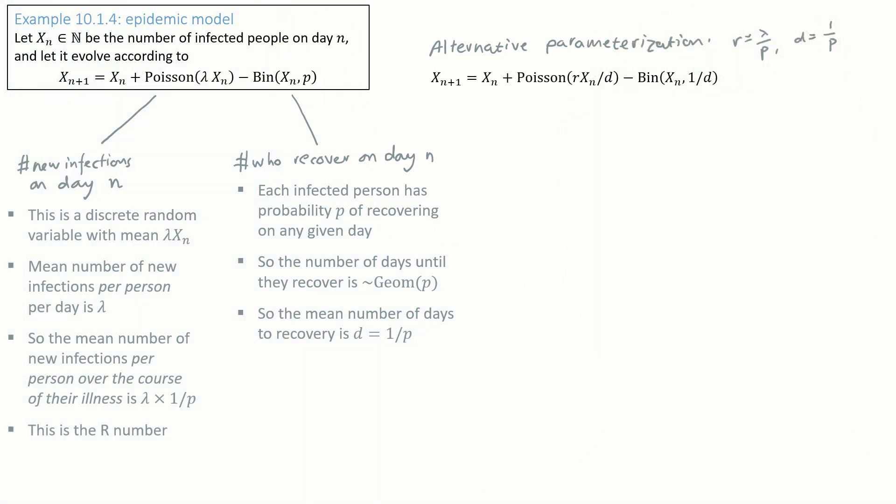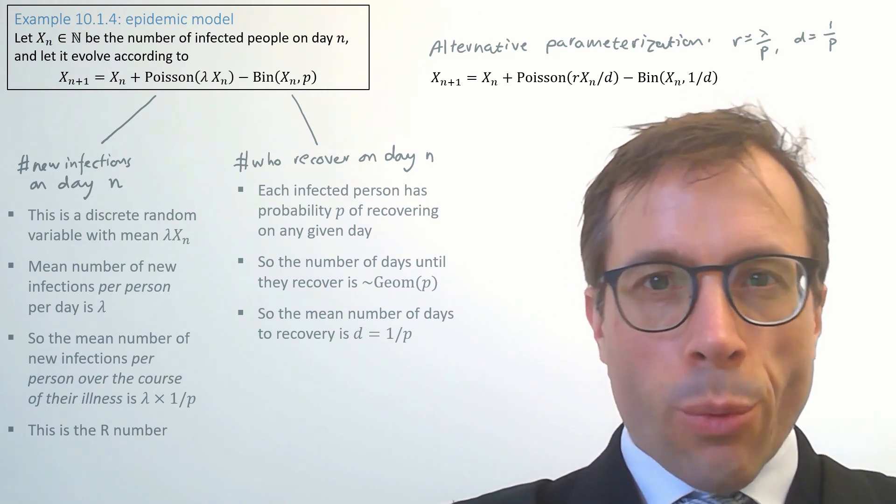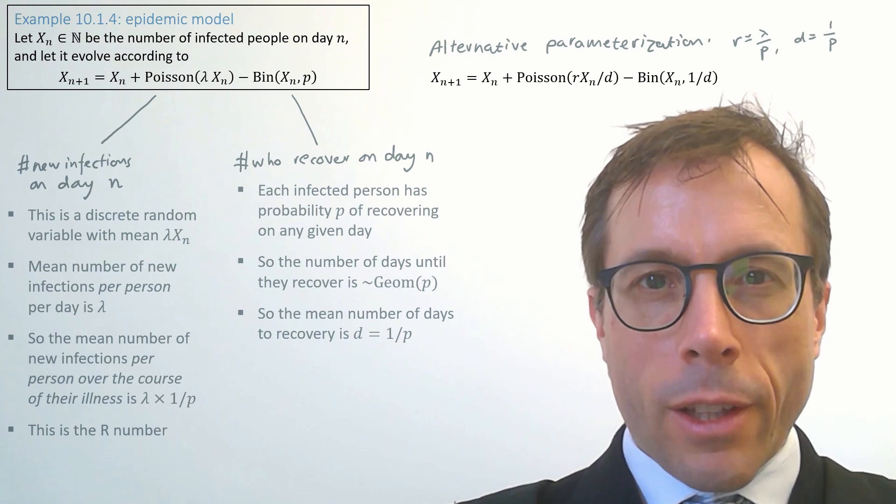It's probably more helpful if we rewrite the model using these natural parameters d and r rather than p and lambda. This is what we get. I like to write things in natural parameters whenever I can figure them out because it just makes it easier to think through how they're likely to affect the system.